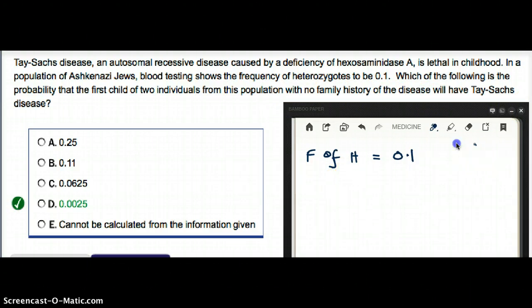There is a population and the frequency of heterozygotes in this population is 0.1. Heterozygotes are not going to cause the disease - they don't have the disease. To have the disease, they have to be homozygous.